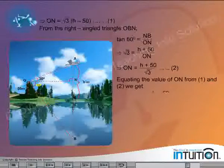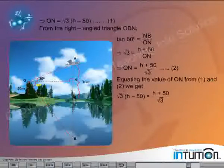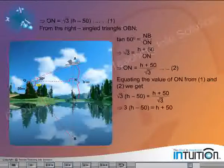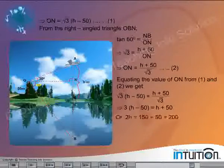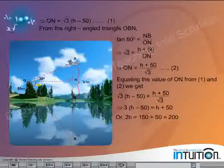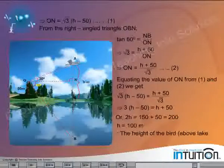Equating the value of ON from equations 1 and 2, we get root 3 into h minus 50 is equal to h plus 50 divided by root 3, which implies 3 into h minus 50 is equal to h plus 50, or 2h is equal to 150 plus 50 is equal to 200. h is equal to 100 meters.